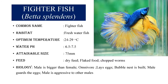Fighter fish is also an ornamental fish. The scientific name of the fighter fish is Betta splendens. The common name is fighter fish. It belongs to freshwater habitat. The optimum temperature in which it grows very well is between 24 to 29 degrees C. The water pH should be between 6.5 to 7.5. The maximum attainable size is about 75 mm. It feeds on live food, bloodworms, and dry feed. The male fish is noted to be bigger than the female. It is basically omnivorous. They lay eggs, build bubble nests, and the male guards the eggs.